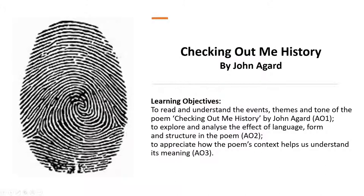Hello, welcome to this video about the poem 'Checking Out Me History' by John Agard. I'm Miss Kilburn Bond. What I'm hoping to do through this video is help you to read and understand the events, the themes and the tone of the poem 'Checking Out Me History' by John Agard, and that will enable you to show, if you're writing about this poem in an exam, assessment objective one — the ability to see the overview of what this poem is trying to say.